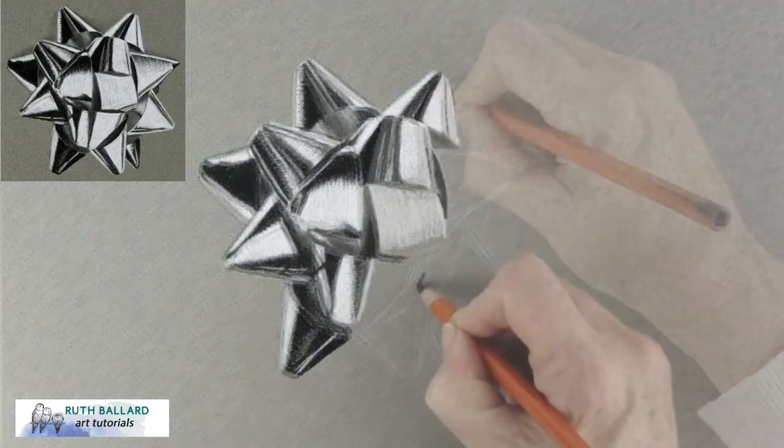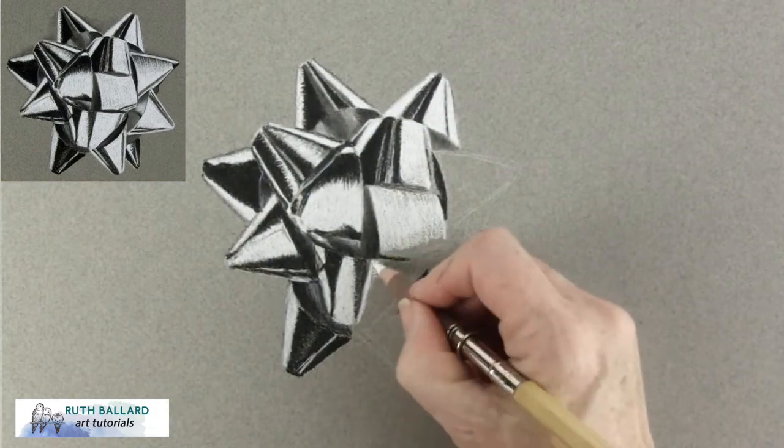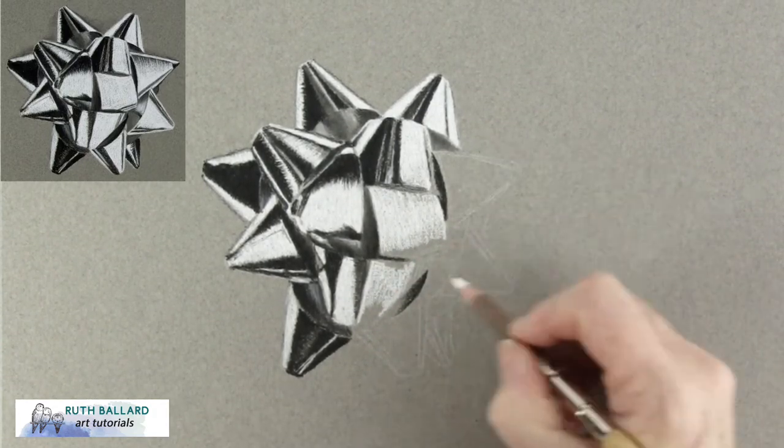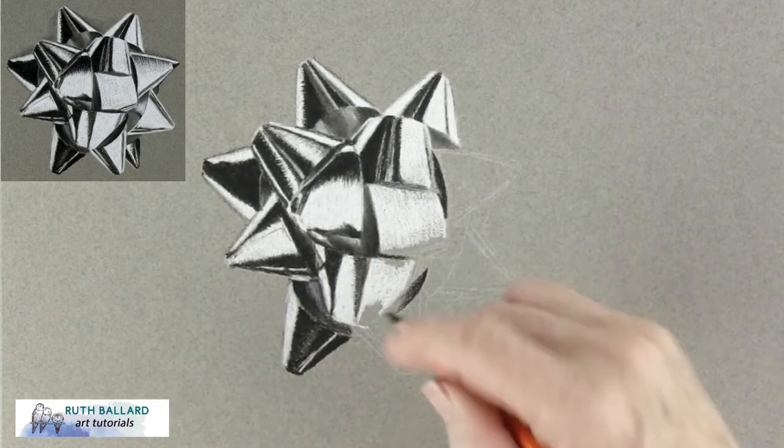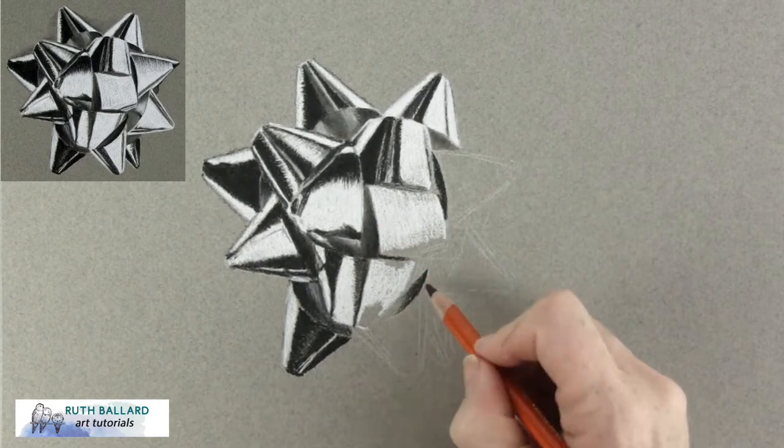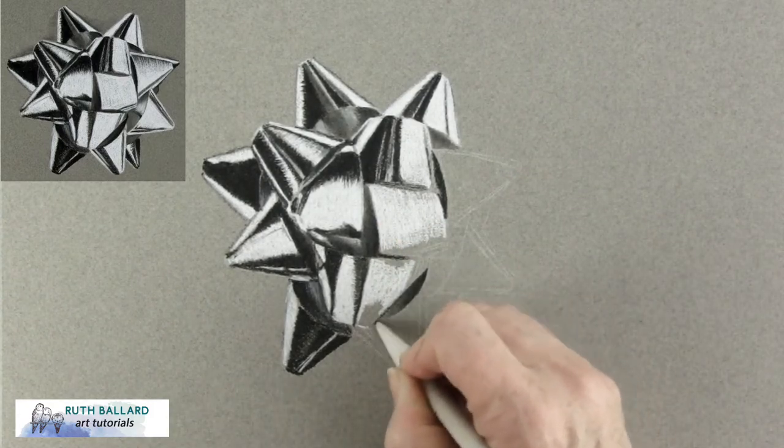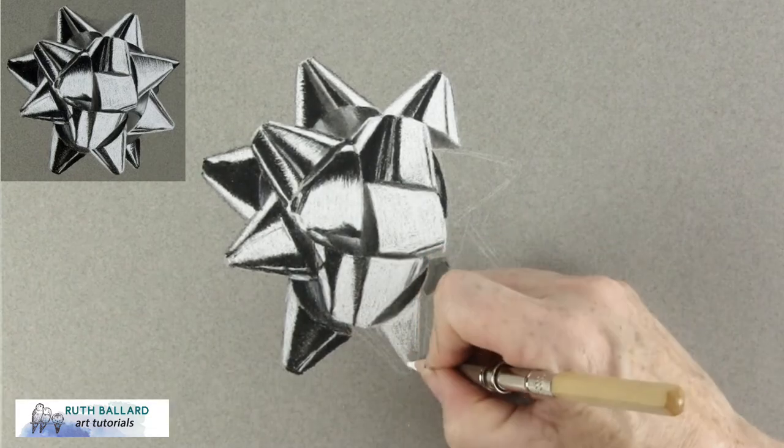Now there are two sides of this pastel paper and you can use either side. I just happen to prefer the smoother side. The rougher side is harder to blend with as there's more tooth to it so using this side just made blending a little bit easier. But if you like texture and want to convey that then the rougher side will work best. I just didn't want any texture on this smooth and shiny bow.